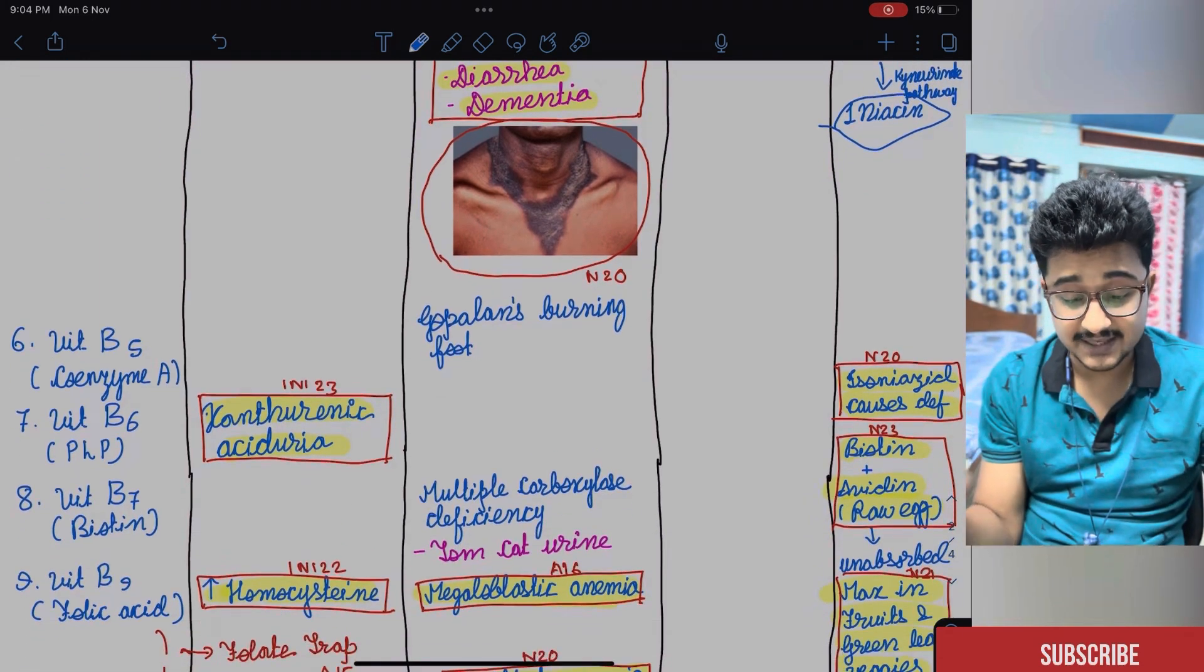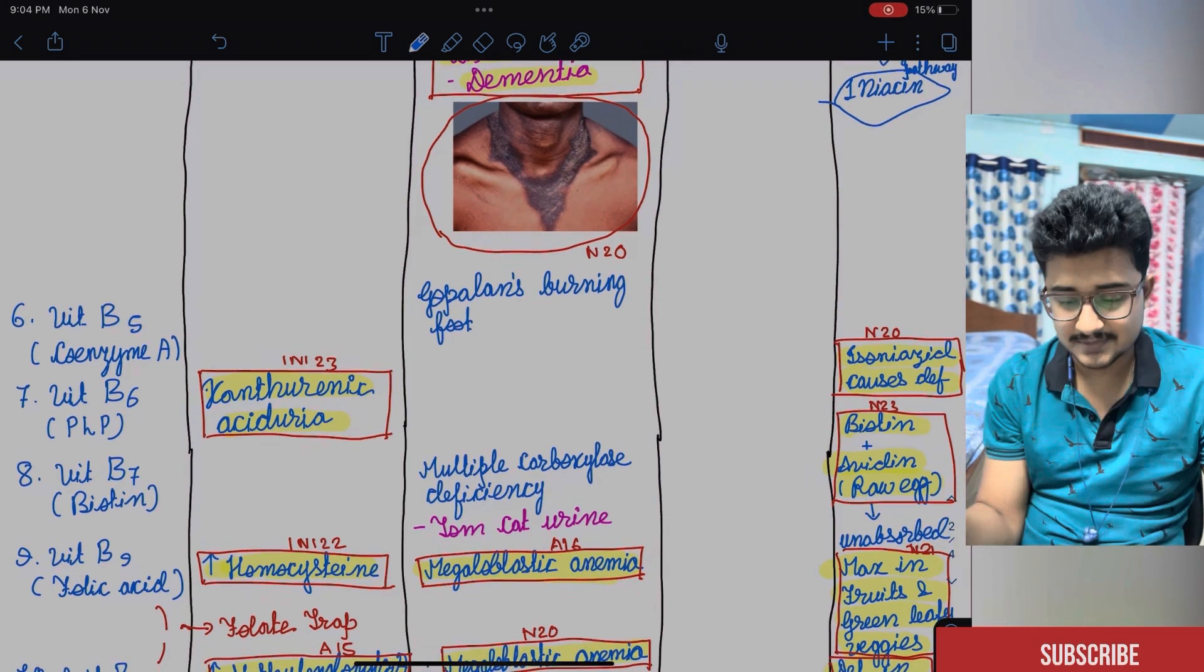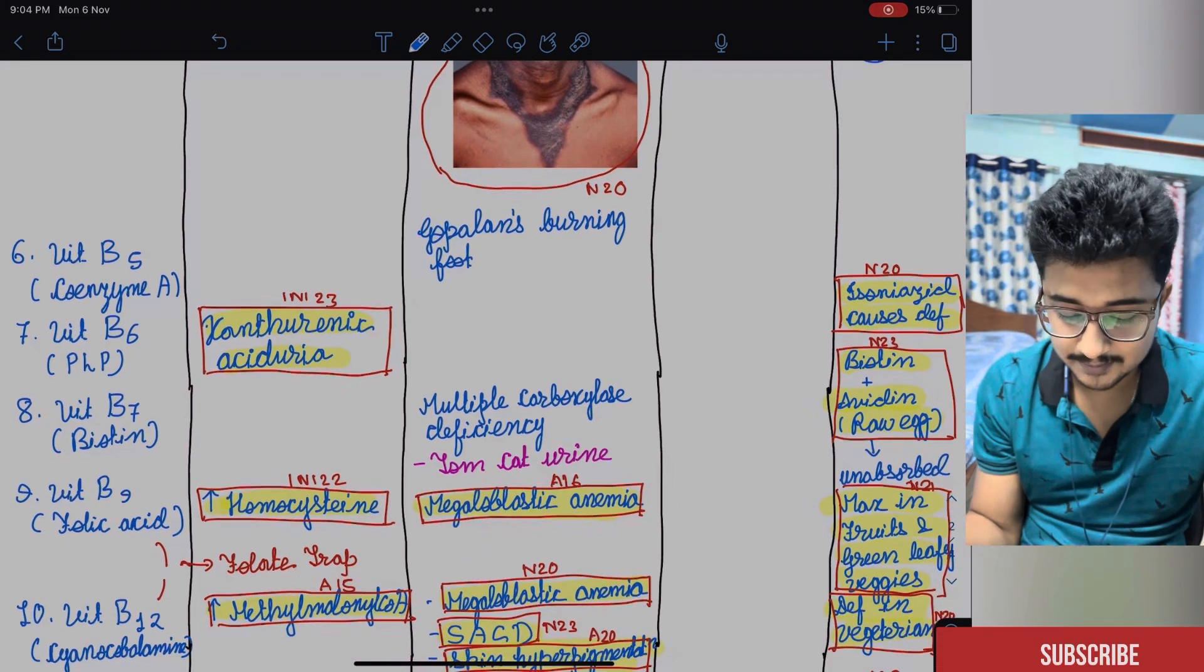After that is the vitamin B5, the coenzyme A. This has not been asked. Prospect MCQ, Gopalan's burning foot, like burning foot-like sensation that was described by Gopalan.